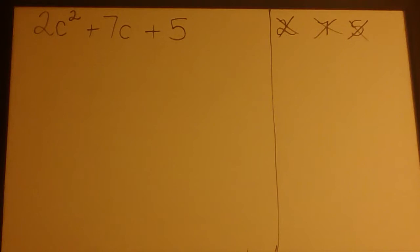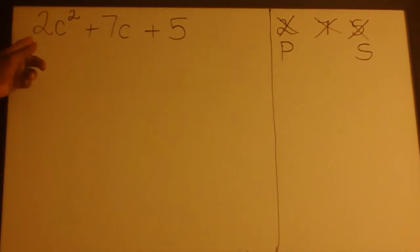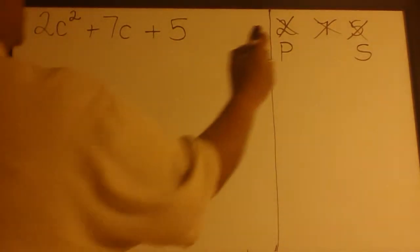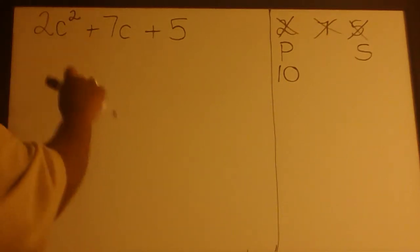Now we can move to product sum. We need a product of 2 times 5, which is 10, and the sum of 7.